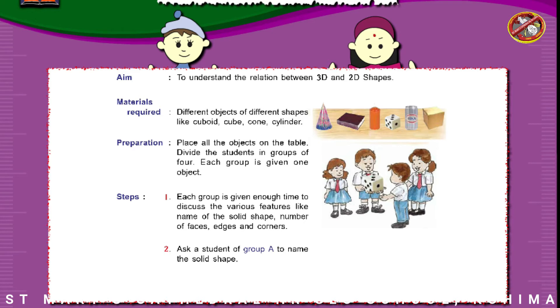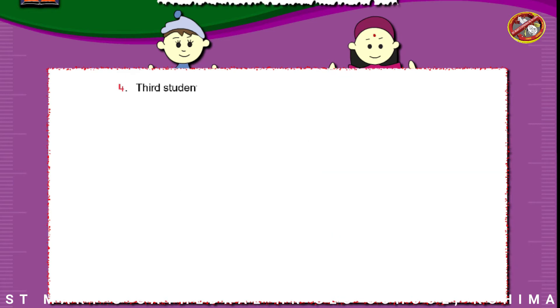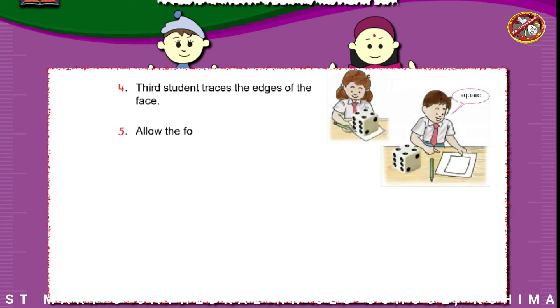Another student counts the number of faces, edges, and corners. The third student traces the edges of the face. Allow the fourth student to name the 2D shape. Repeat the activity with the other groups.